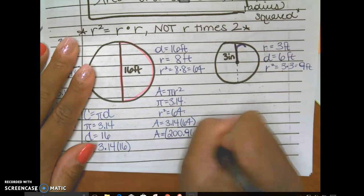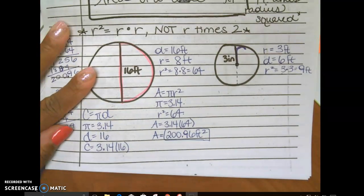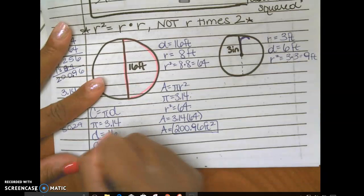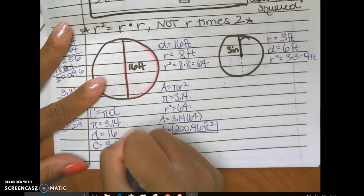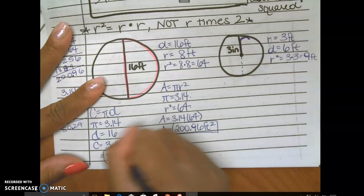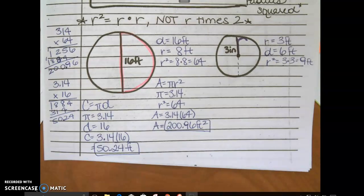That is feet squared. Now I need the circumference, this one over here. 50.24. And this is just feet, because it's distance around. It's kind of like perimeter of a circle. Okay. That is how you find the area and the circumference of a circle.